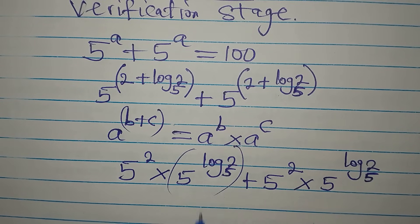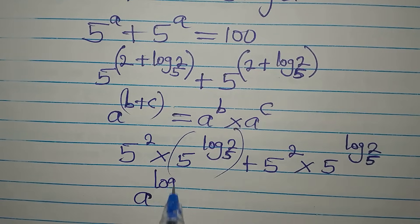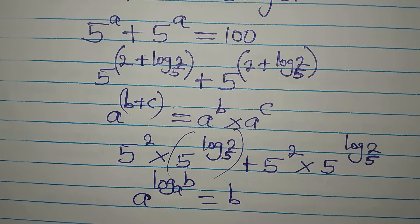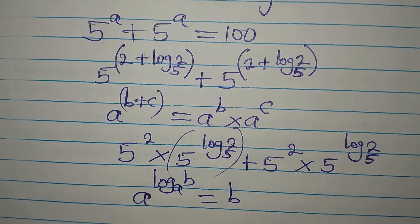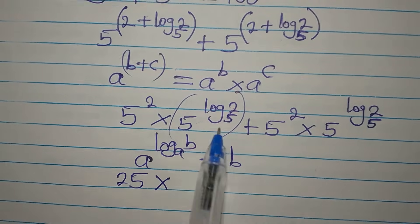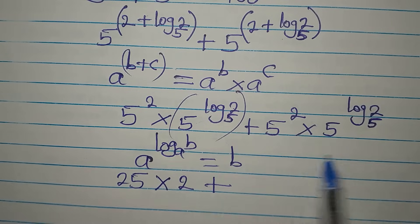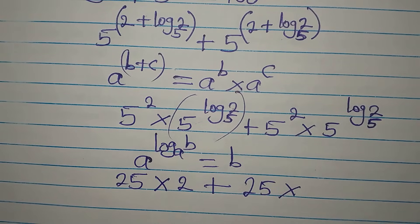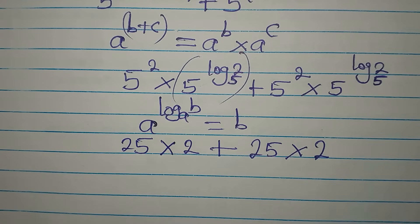Now I'll apply the law that says a to the power of log_a(b) equals b. Therefore, 5 to the power of log₅2 equals 2. Substituting: 5 squared is 25, multiplied by 2, giving 25 × 2 for each term.